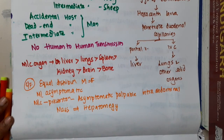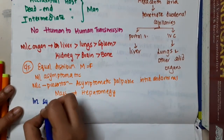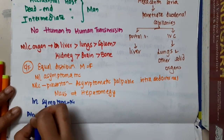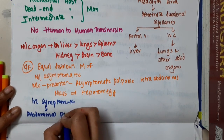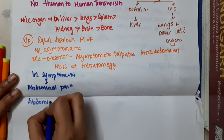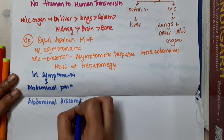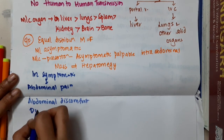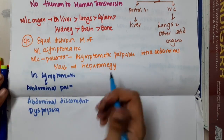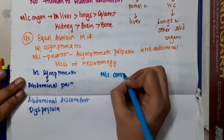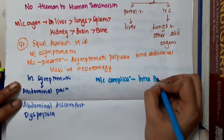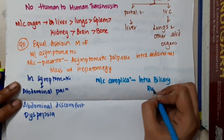In symptomatic patients, the patient will present with abdominal pain, abdominal discomfort, and dyspepsia. The most common complication of hydatid cyst is intra-biliary rupture.